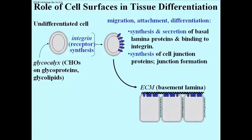What is this all about? It's about the cell synthesizing and then secreting basal lamina or ECM proteins, which then bind to integrin and to each other to create the ECM. And it's about the synthesis of cell junction proteins to allow cells, once they recognize one another, to actually form junctions.